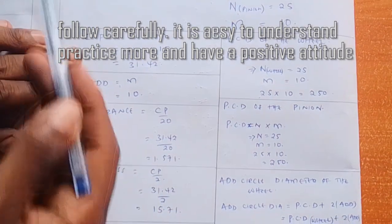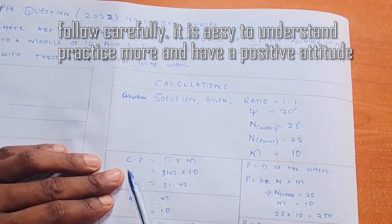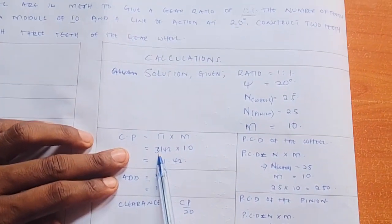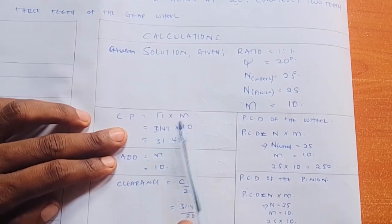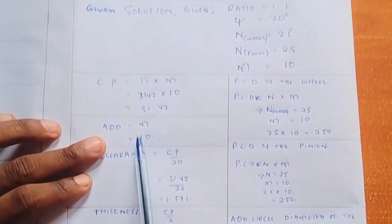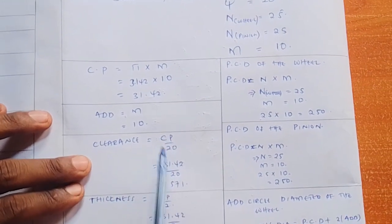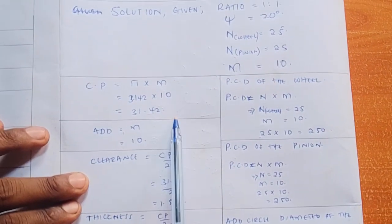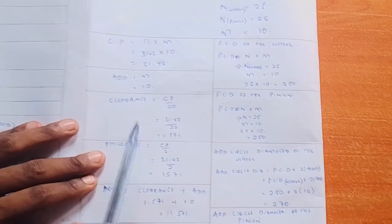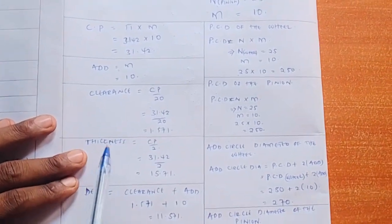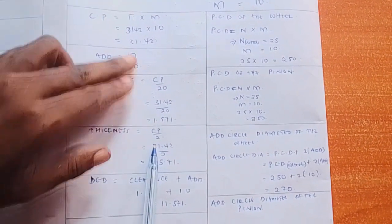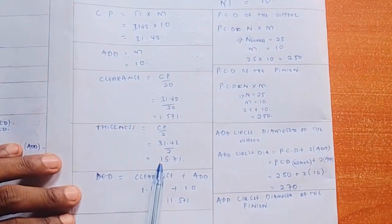Now let us quickly look at how to apply these formulas. First, we look for the CP. CP equals pi times module, so pi (3.142) times 10 equals 31.42. Then we look for the addendum: addendum equals module, which is 10. Then clearance equals CP divided by 20, so 31.42 divided by 20 equals 1.571. Then thickness equals CP divided by 2, so 31.42 divided by 2 equals 15.71.